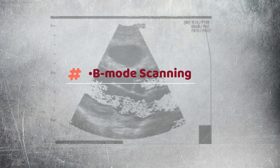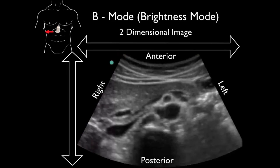B-mode. In B-mode ultrasound, a linear array of transducers simultaneously scans a plane through the body that can be viewed as a two-dimensional image on screen.